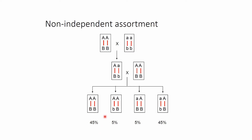In this case, the alleles denoted by the capital letters A and B seem to appear much more frequently together, and also the alleles denoted by the lowercase a and b appear to occur much more frequently with each other.